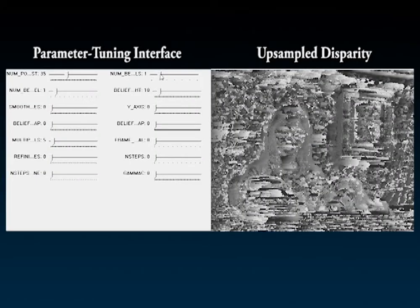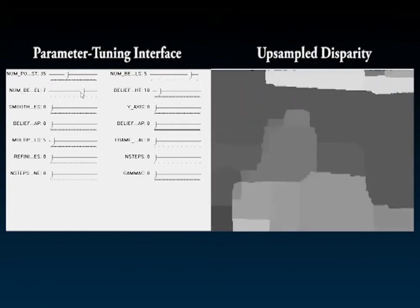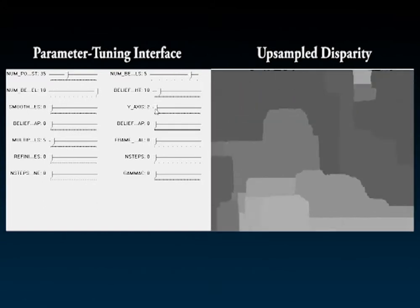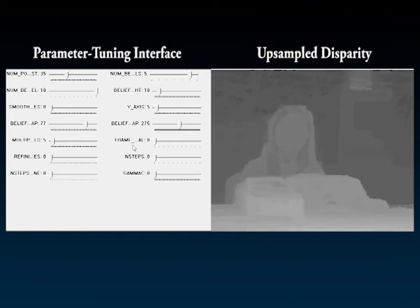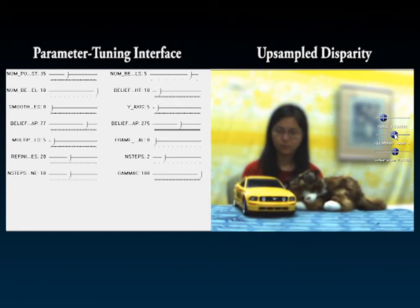A crucial step of our real-time stereo matching module is to choose the proper parameters to fit different types of scenes. We have developed an interface to dynamically change the parameters. Since our system runs at interactive speed, we can instantly see the results and fine-tune the parameters accordingly.